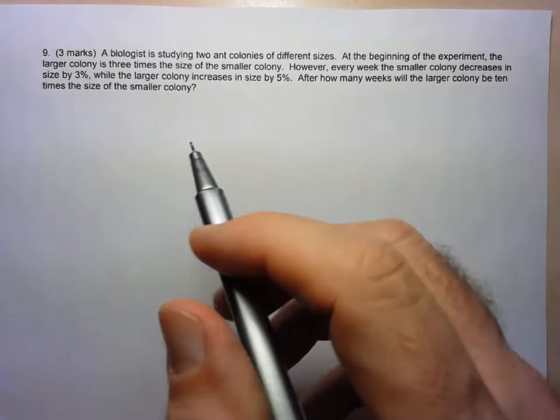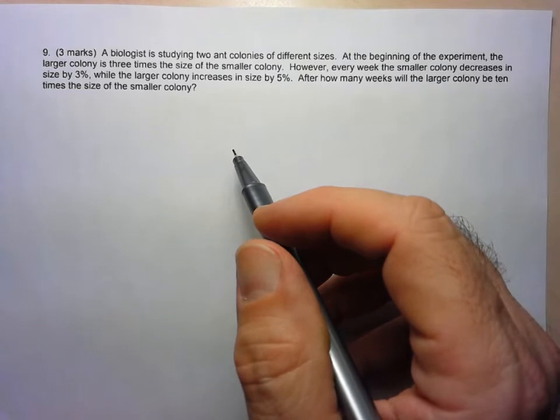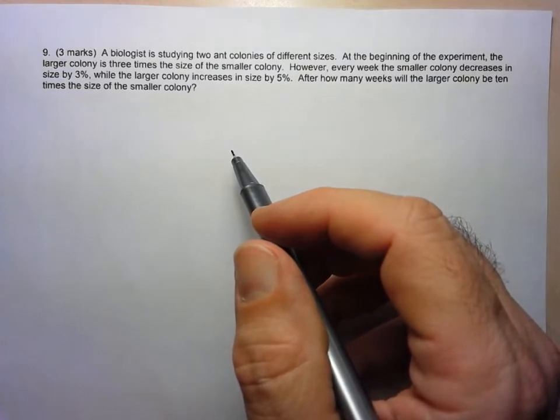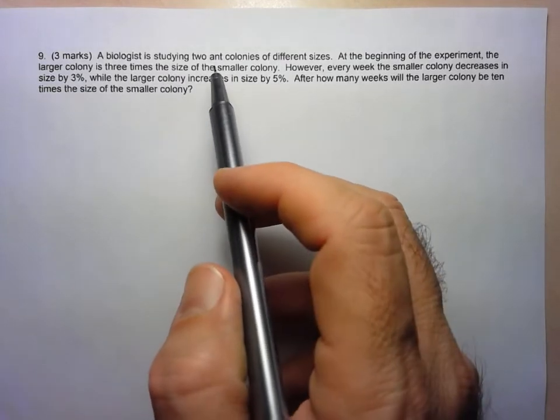So here we're looking at two different ant colonies and we're talking about their populations. They tell us that the larger one is three times the size of the smaller one initially.